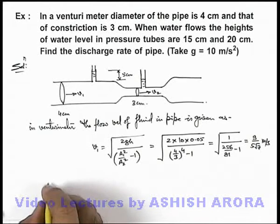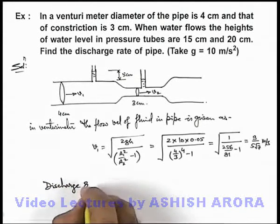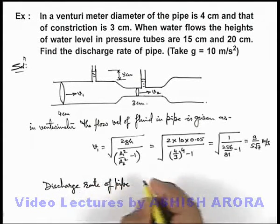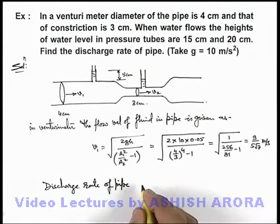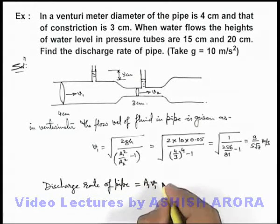And if we wish to find out the discharge rate of pipe, discharge rate of pipe, the rate at which it is ejecting, or the volume flow rate of water can be given as the product of area and the flow velocity.